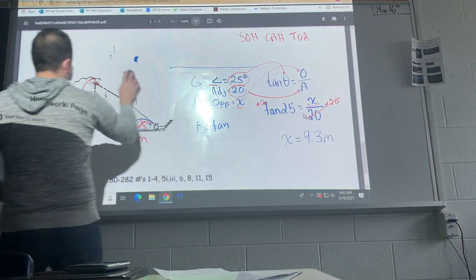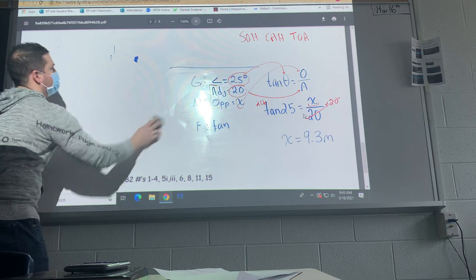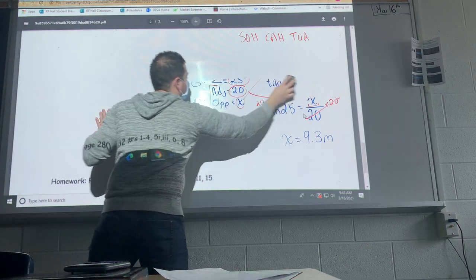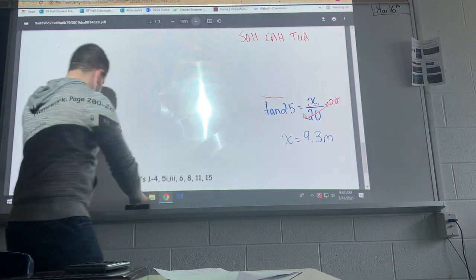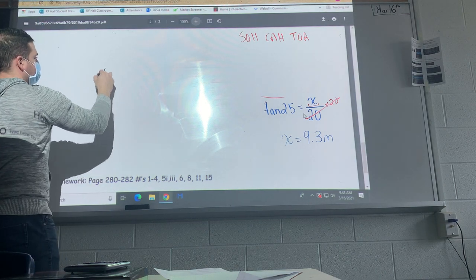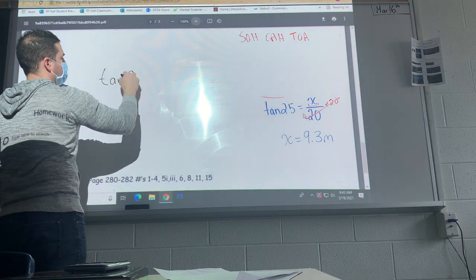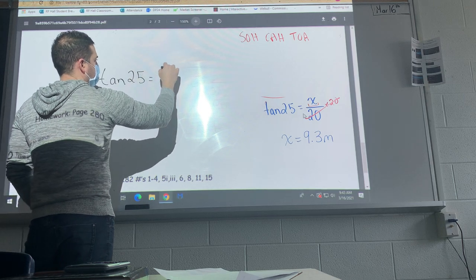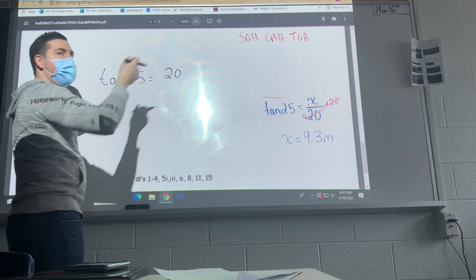Okay, the homework is there but I just want to show you two other options. So what if I had this instead? Say I had tan 25 and I had the 20, say I had that opposite side.